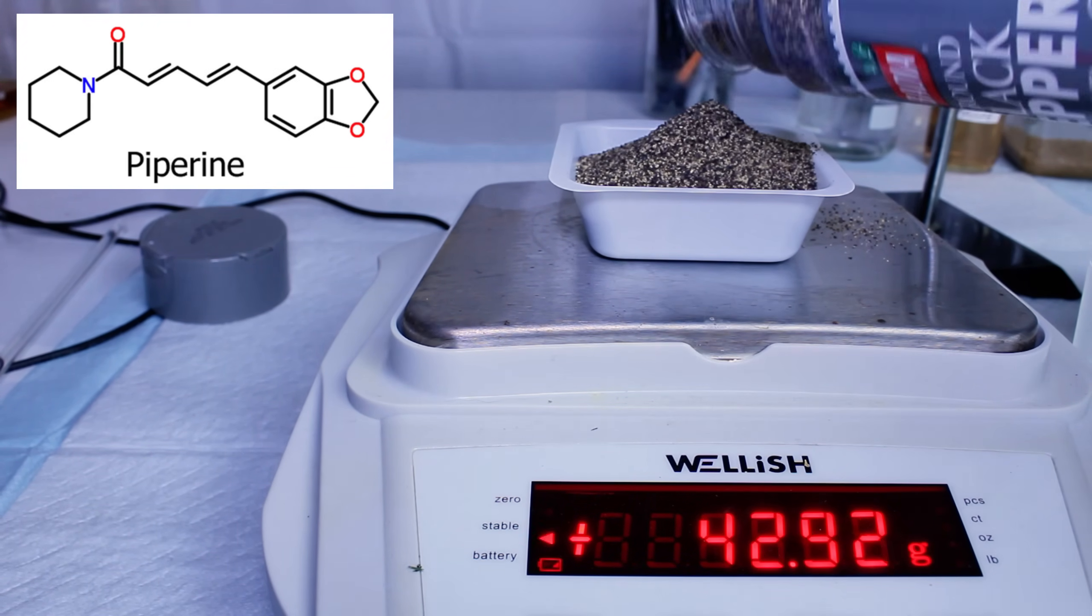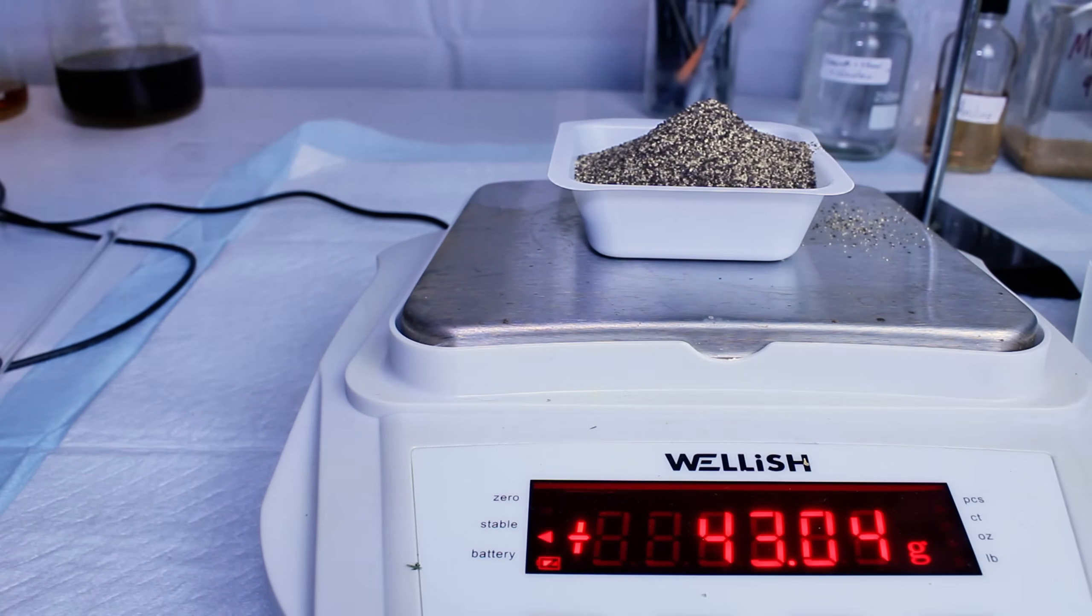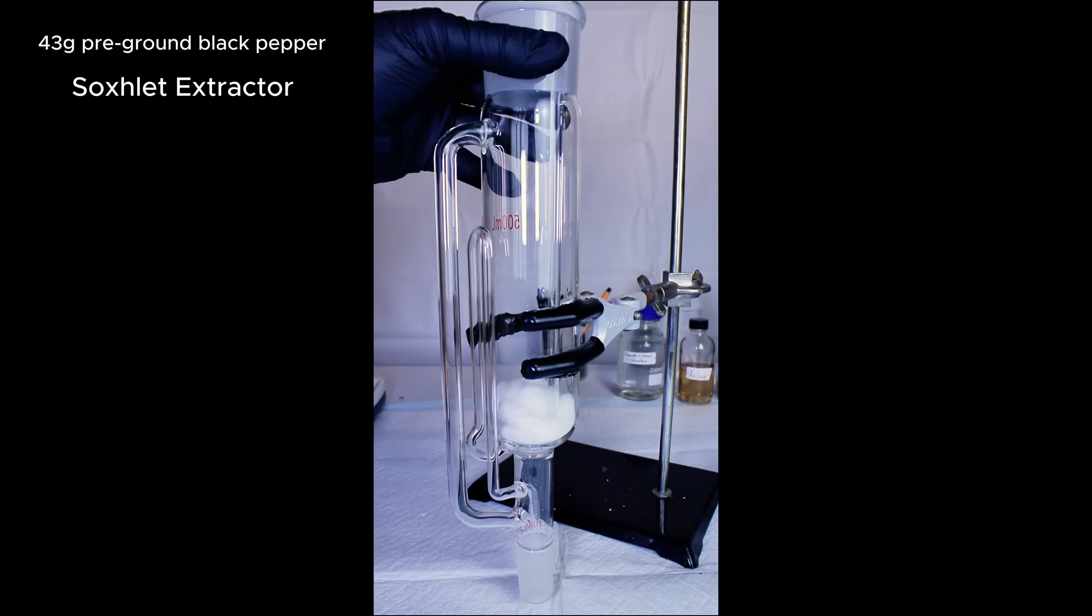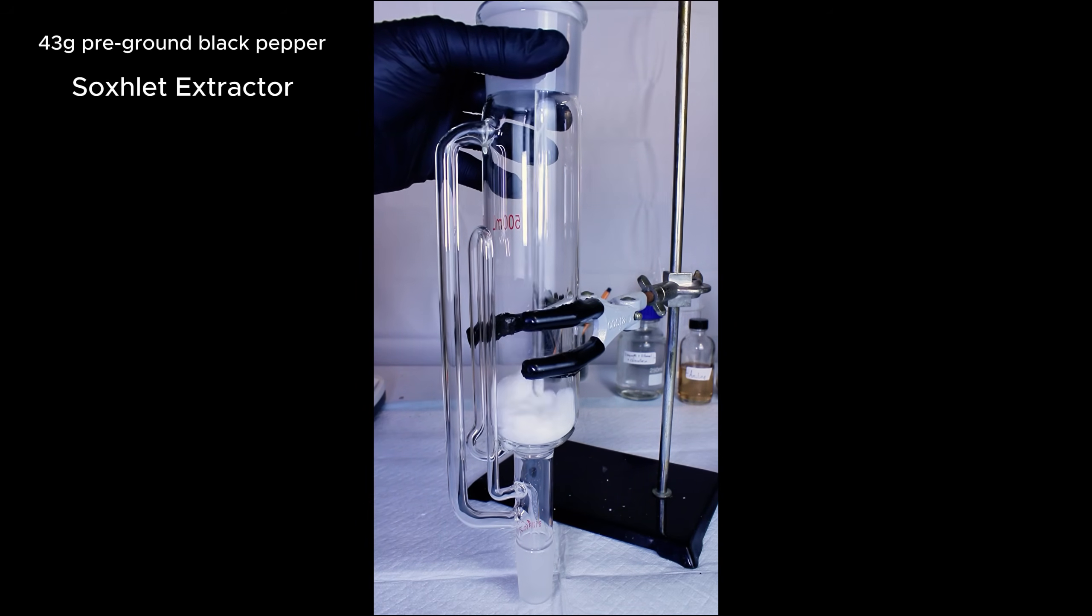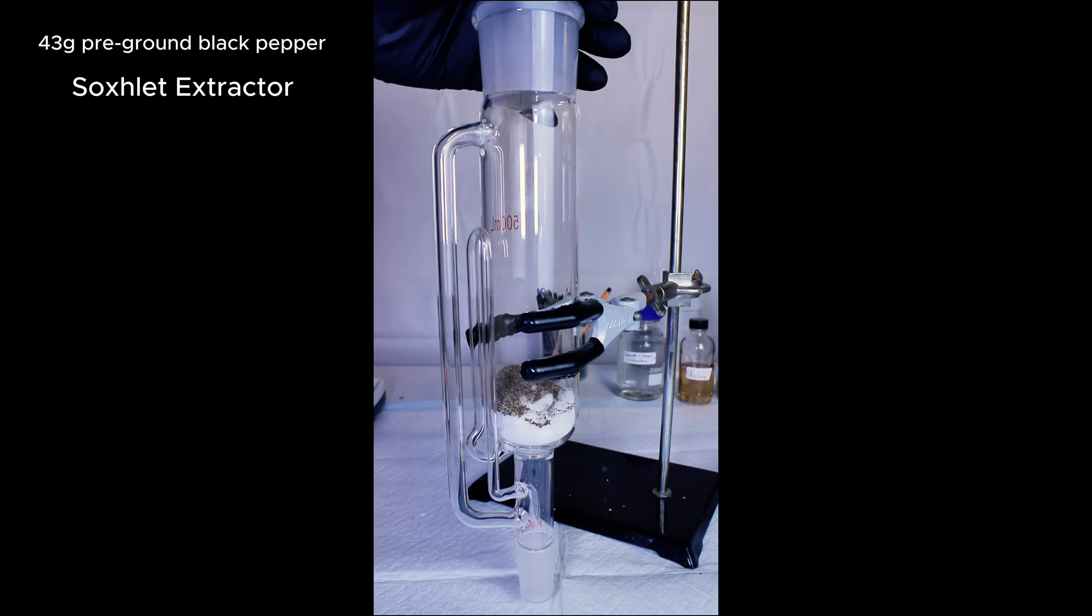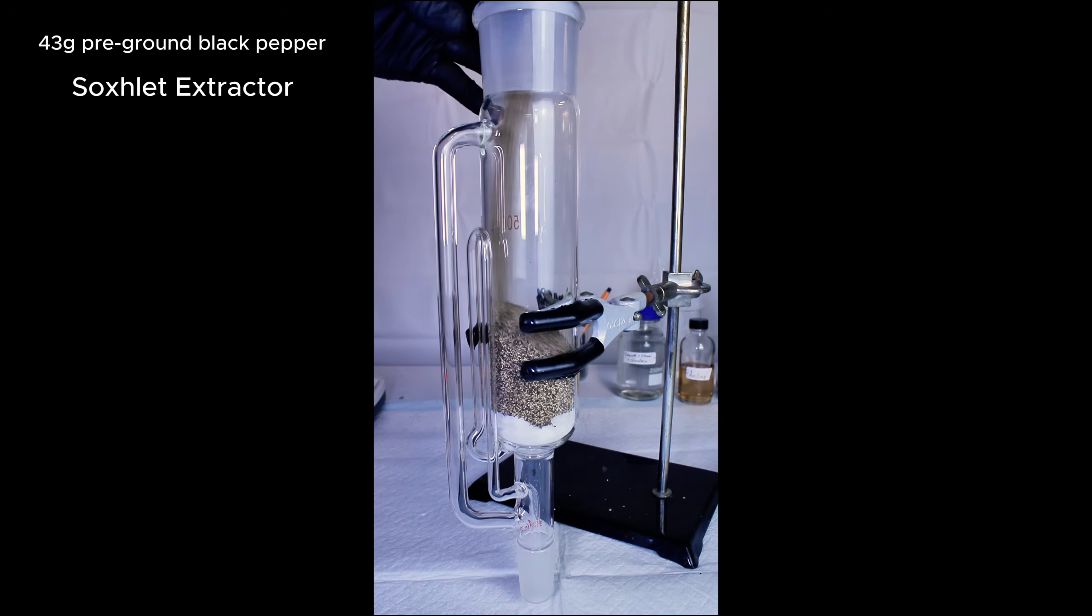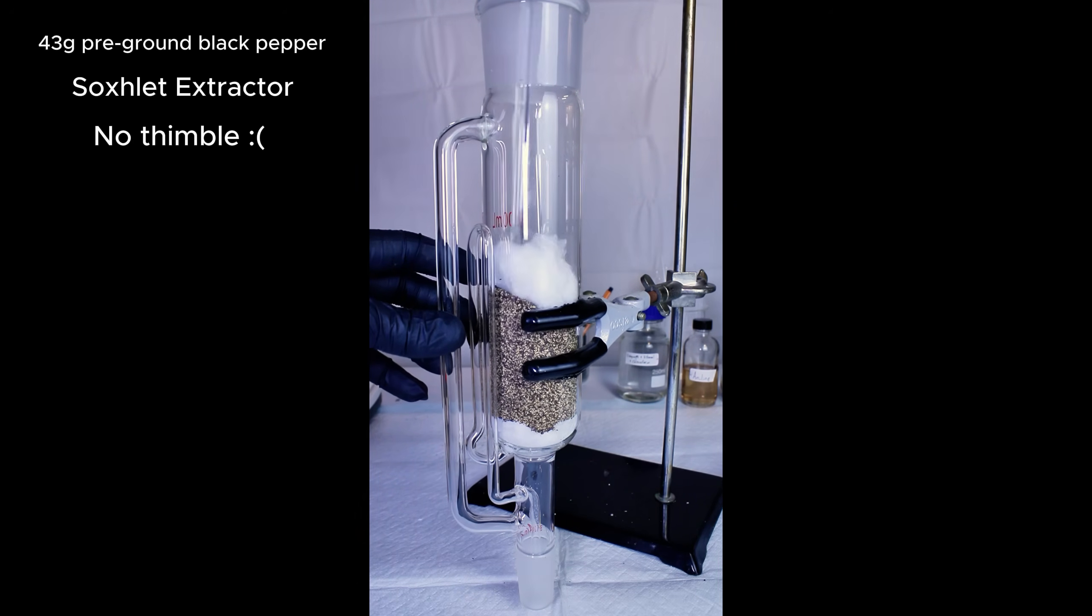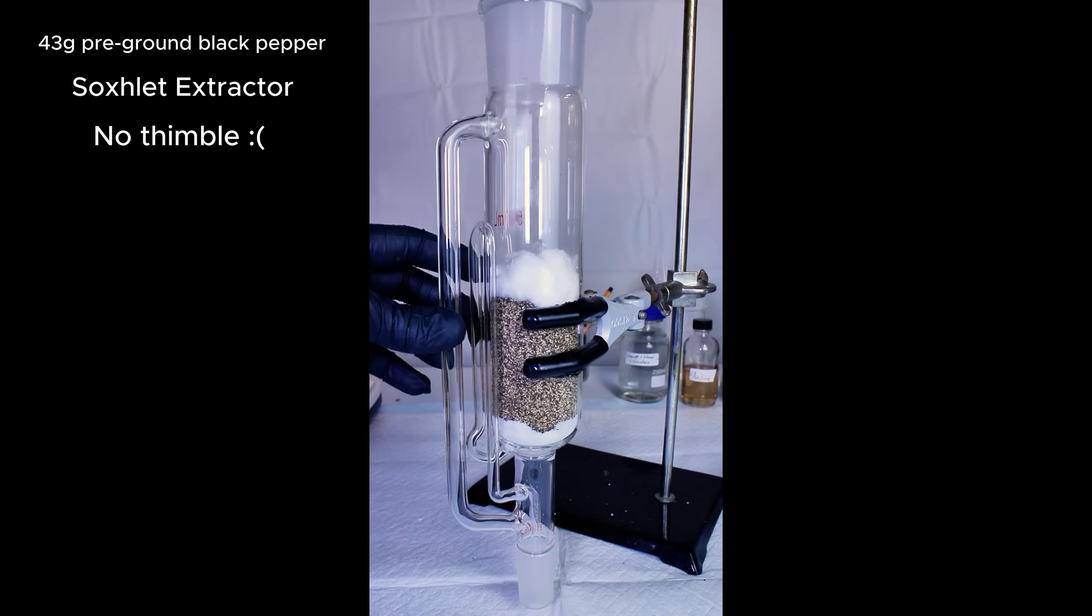To get started, I weigh out just about 43 grams of pre-ground black pepper and set it aside. Next, I cram a cotton ball into the bottom of this piece of glassware called a Soxhlet Extractor, which I've never demonstrated before on this channel. Once the cotton is in place, I pour in my black pepper and then put another cotton ball on top, and these two cotton balls are basically taking the place of a piece of glassware called a thimble that's supposed to sit inside of the Soxhlet Extractor.